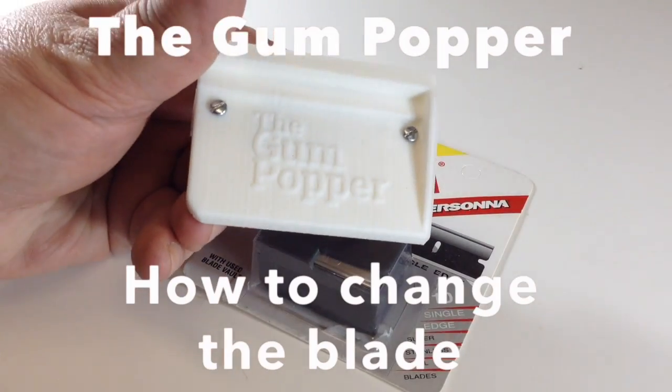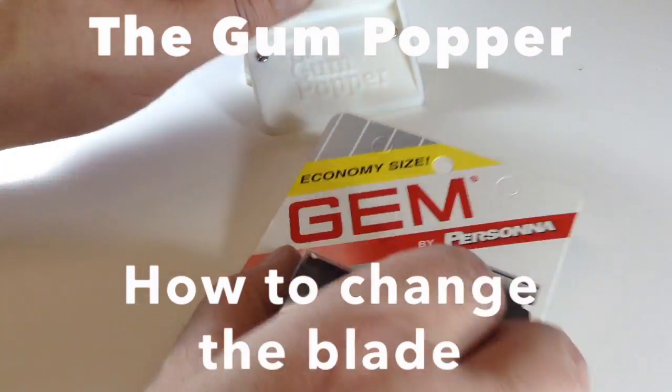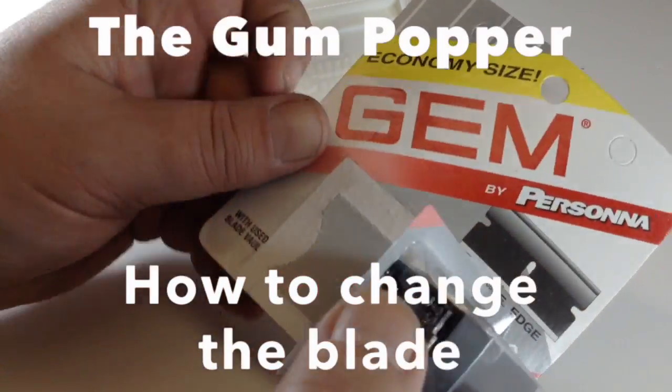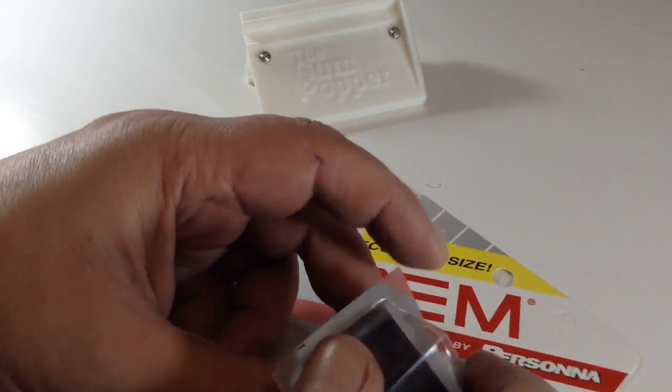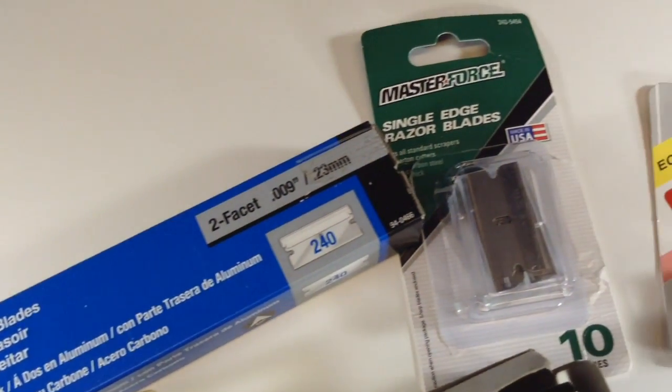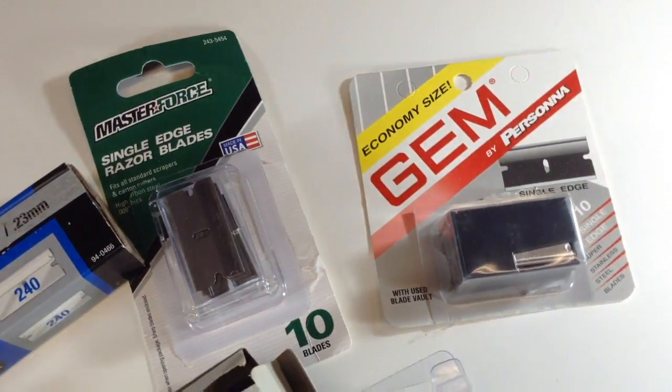Alrighty, I'm gonna change the blade on the gum popper now and I'm using a gem blade. Gem is really a nice brand of blade by Persona. You can use just about any kind of single-edge razor blade and it'll work for you.